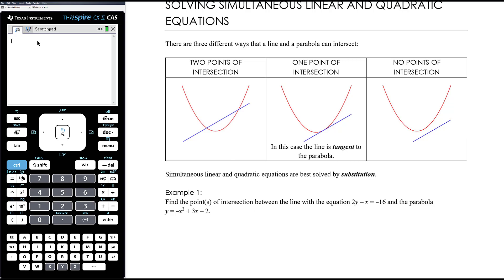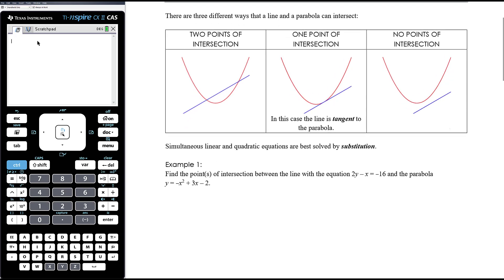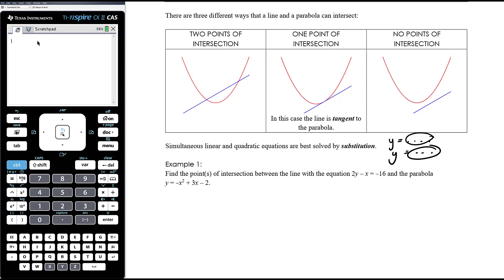When we have simultaneous linear and quadratic equations, algebraically they're best solved by substitution, and it's nearly always easier to substitute the linear equation into the quadratic equation — but it really does depend on the format you've been given both equations. Remember, substitution is useful when at least one equation is y equals or x equals. We'll usually have that when finding points of intersection between two graphs — normally both are given as y equals something, so it's simply about making those two things equal to each other.